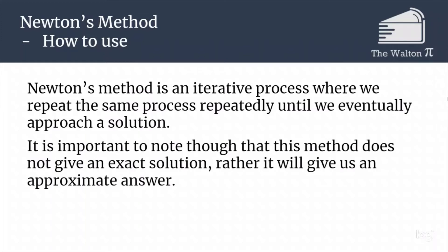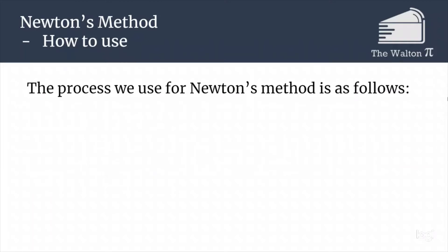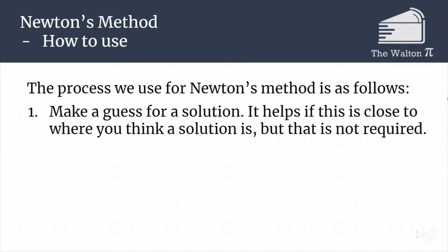It's important to note that this method does not give an exact algebraic solution. Instead, it's going to give us an approximate answer with more and more accuracy in our decimal approximation. So this is the following process that Newton's method uses. Start by making a guess for the solution. This can be literally any number; it helps if it's close to where you think a solution is, but that's not a requirement for this.